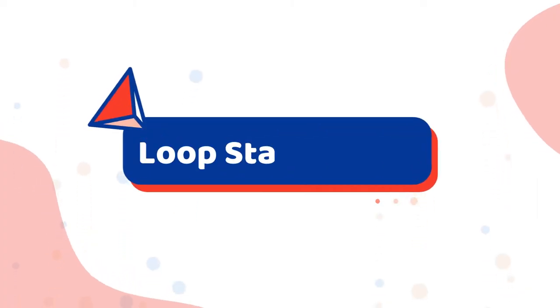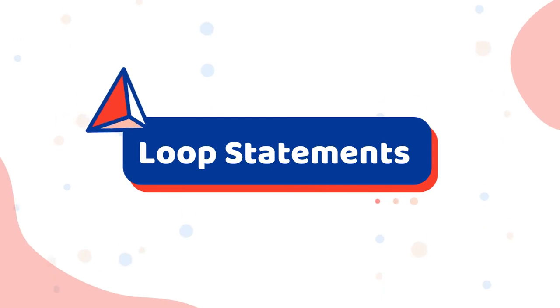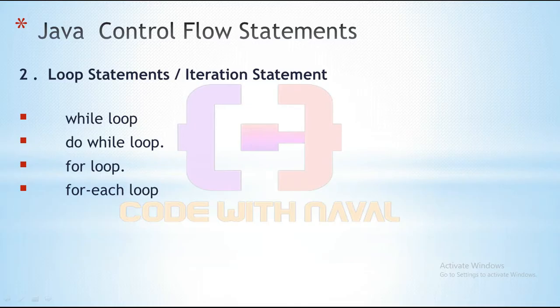In this video, we are going to discuss about loop statements, or we can say iteration statements. For looping and iteration, Java provides while loop, do-while loop, for loop, and for-each loop. Why do we use loops? If we have a list of values and we want to print them one by one, we simply put those values in a loop and we will get them one by one.